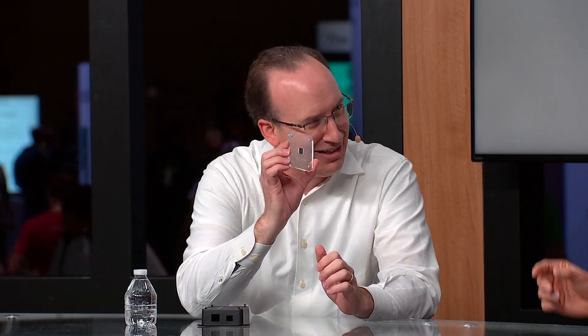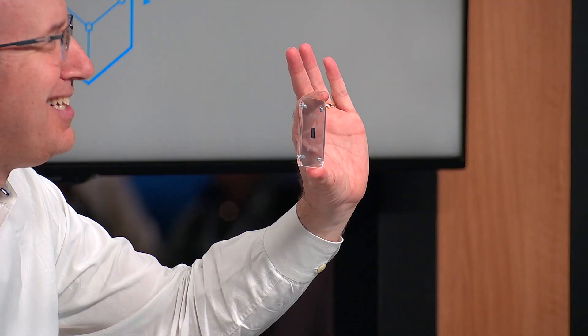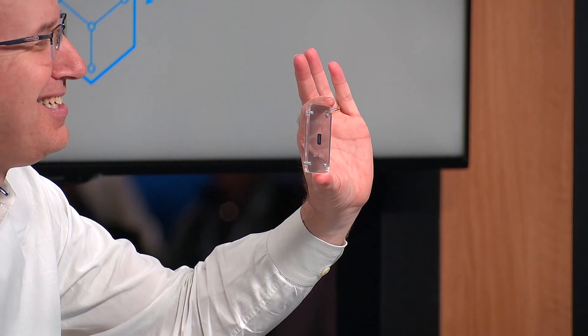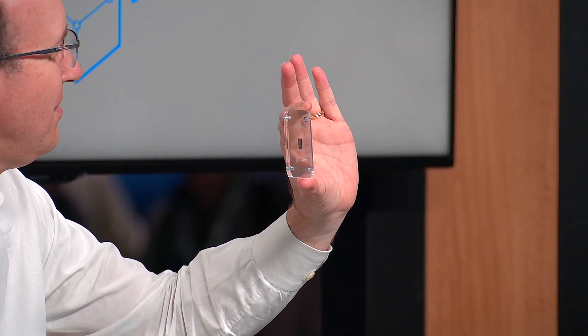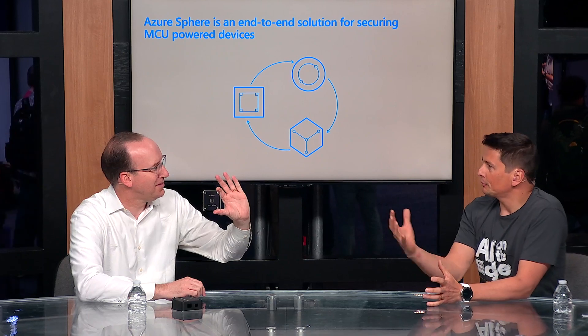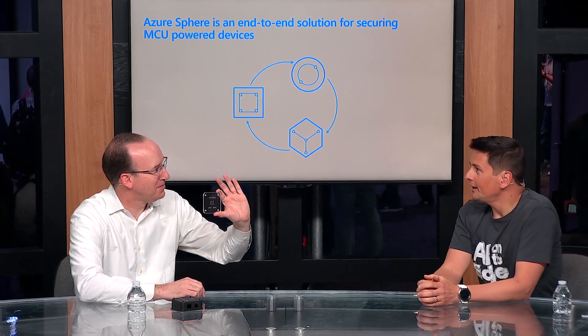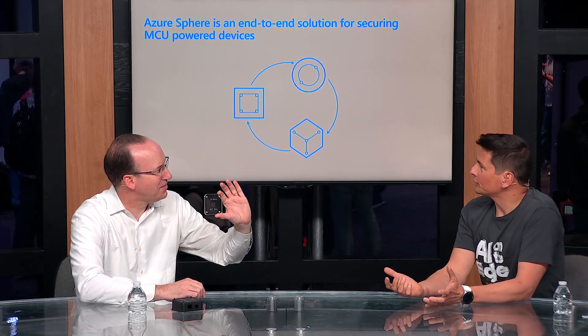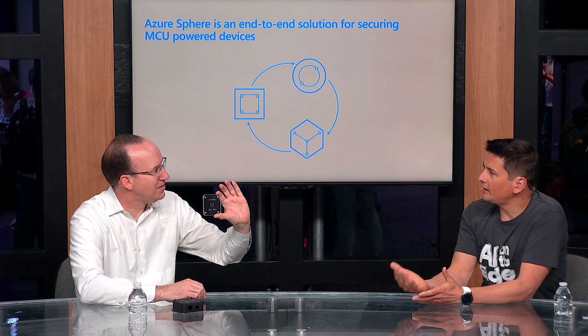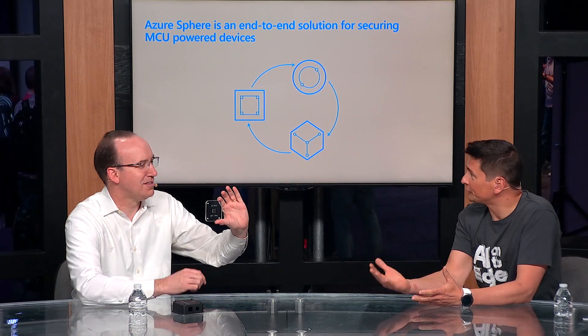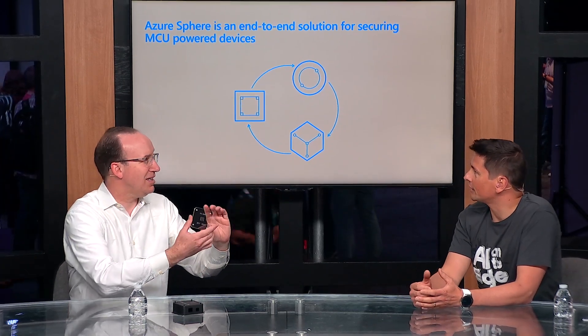The Azure Sphere security service reaches out to each of these devices and keeps them secure. So we understand Azure Sphere is about securing the hardware and providing a service to secure it. Why do we need that in-depth defense on devices today?